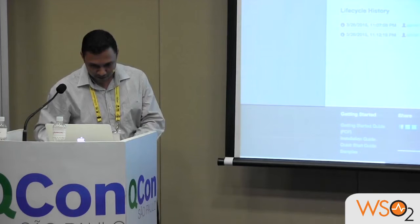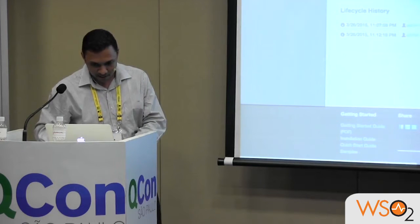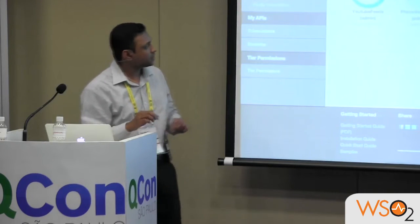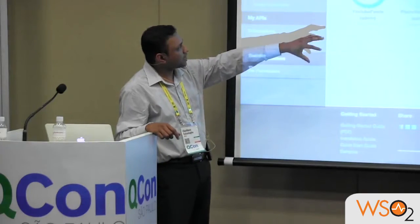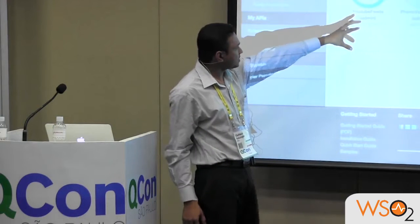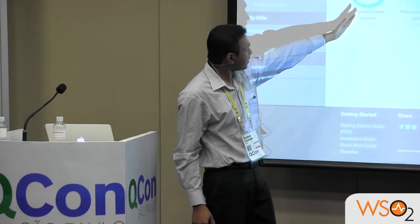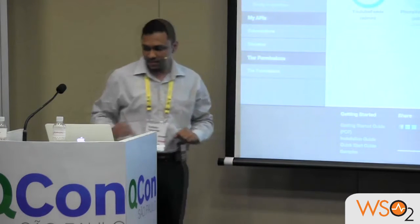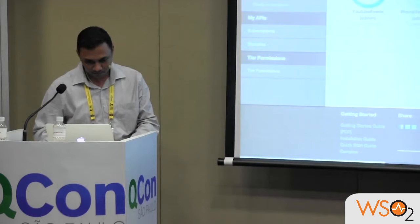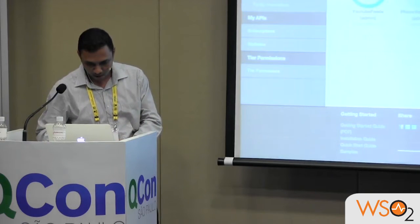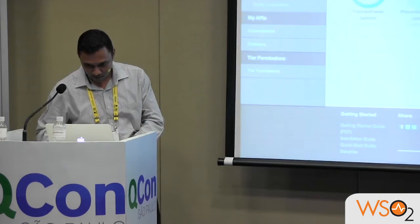Another main feature implemented in the API publisher is statistics. As an API publisher, you might be interested in the usage of your APIs. You can see that I have two existing APIs in my API store, and this shows the usage of my existing APIs. You can also customize these charts as you want.